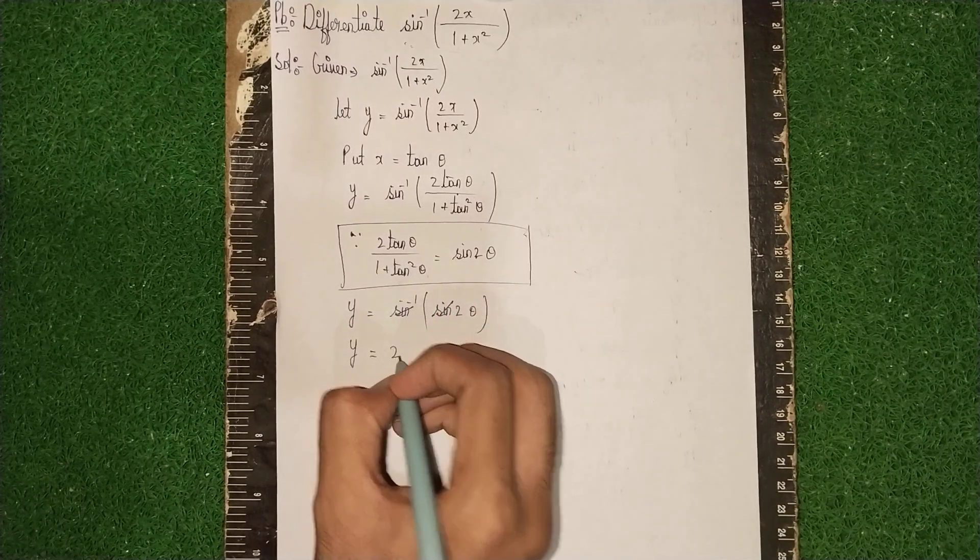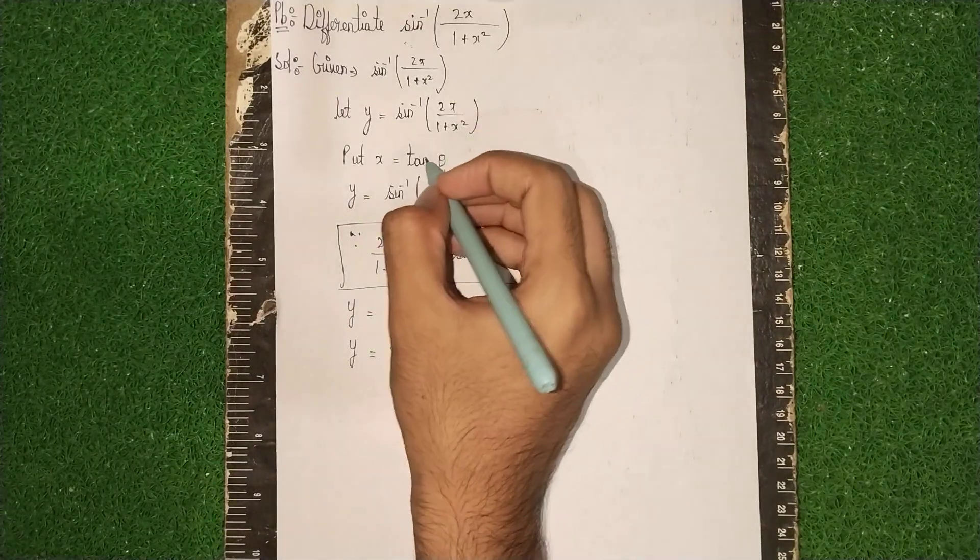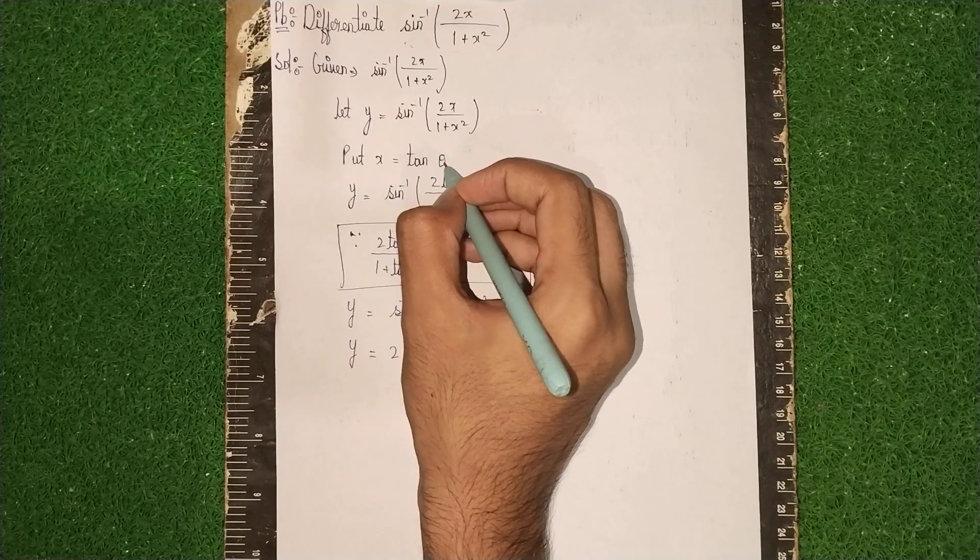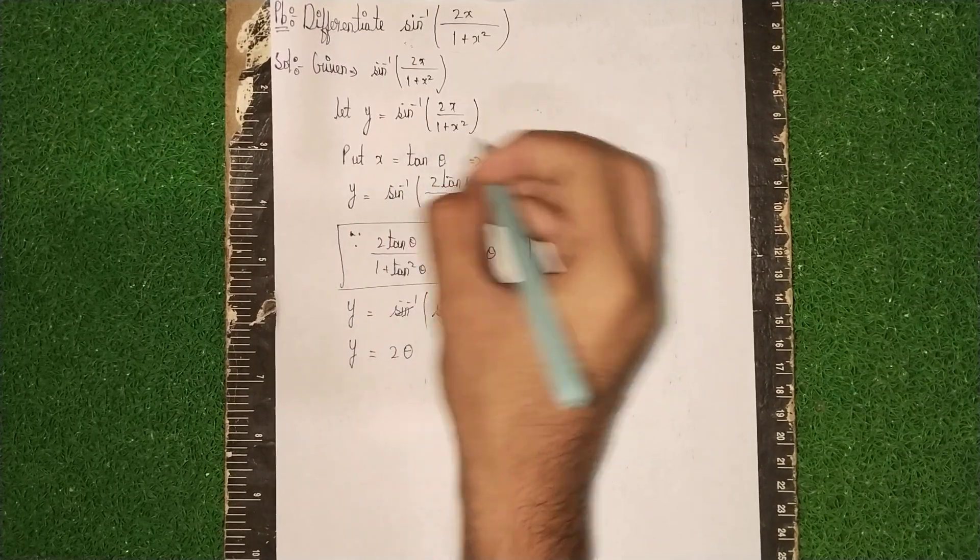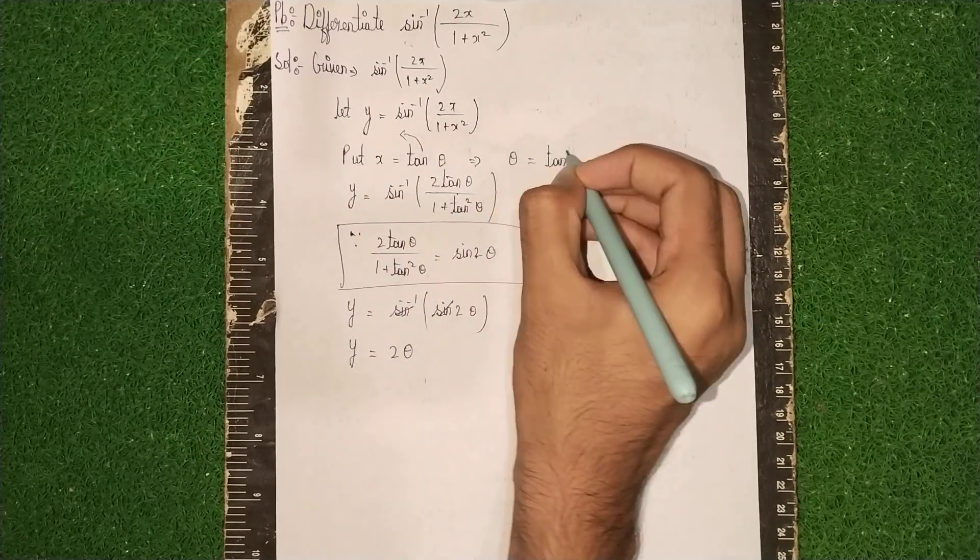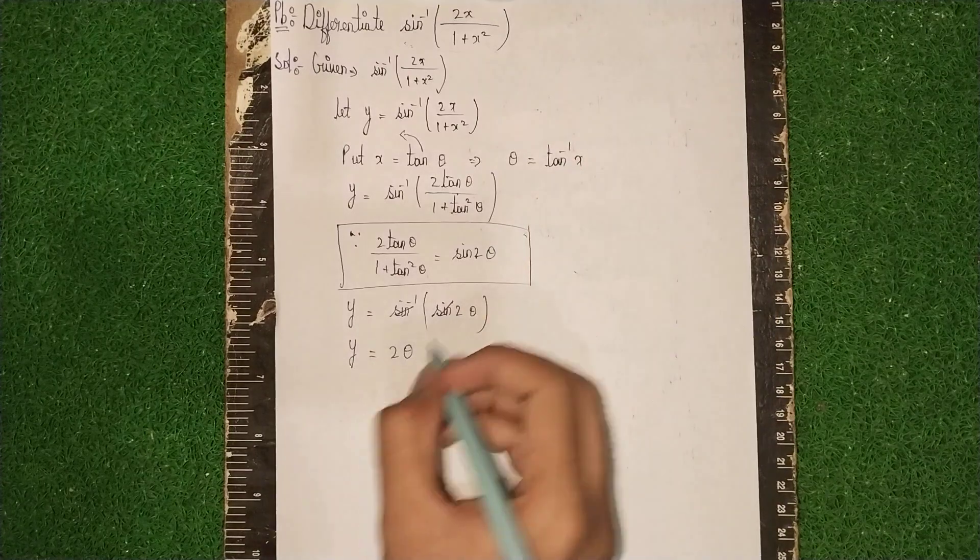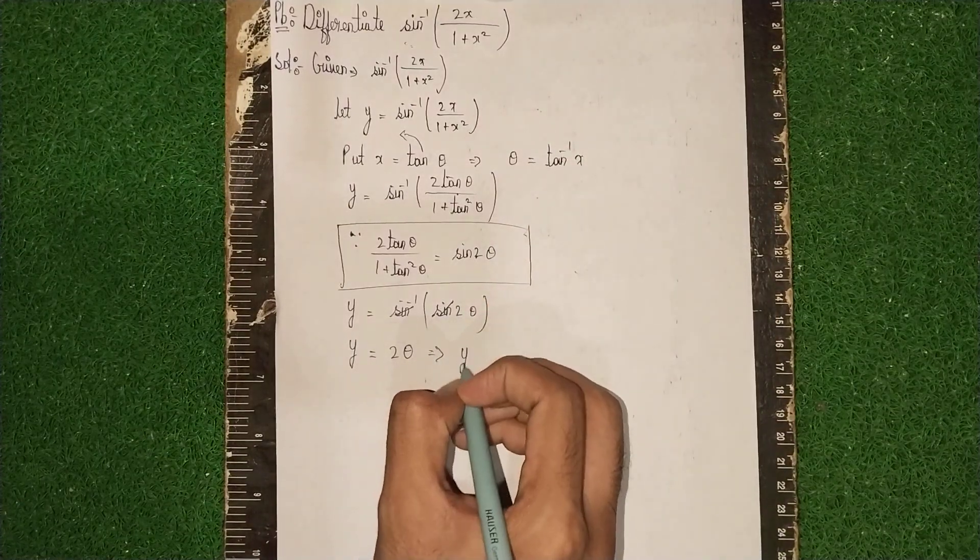Now, I first took x = tan θ, and now I need the theta value. Sending tan to the other side, it becomes inverse. So θ = tan⁻¹(x). Instead of theta, substitute tan⁻¹(x), so y = 2tan⁻¹(x).